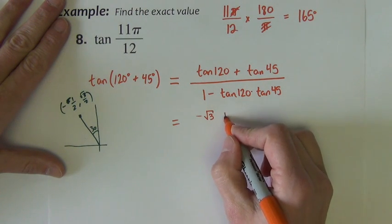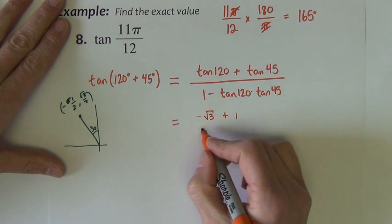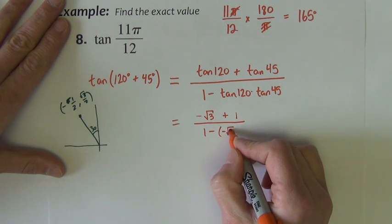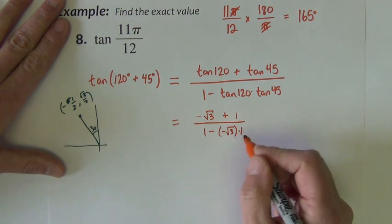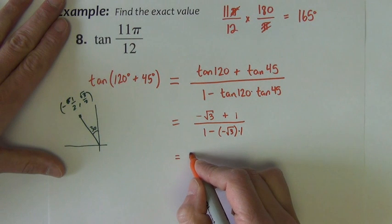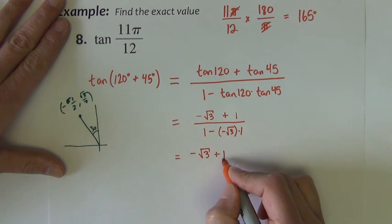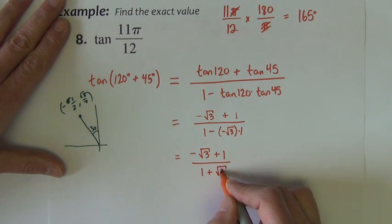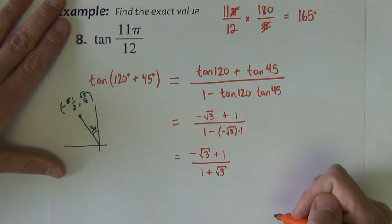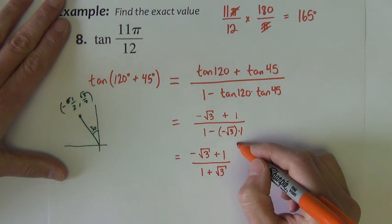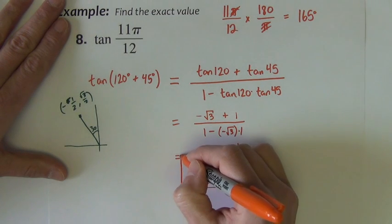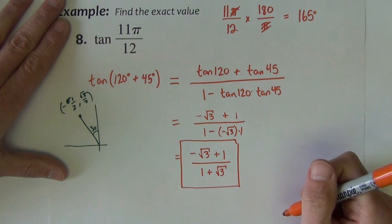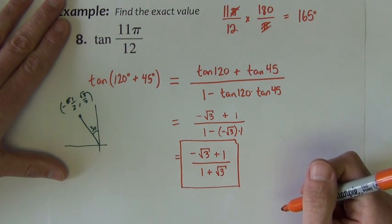Plus tangent of 45 is 1 over 1 minus negative square root of 3 times 1. This becomes negative square root of 3 plus 1 over 1 plus square root of 3. I am okay in instances where we're using this tangent formula to leave radicals in the denominator of the fraction. So if you want to do that, I'm alright with leaving it just like that.